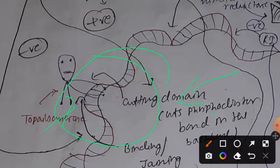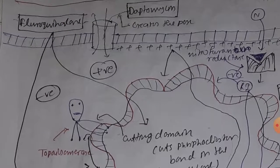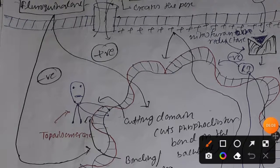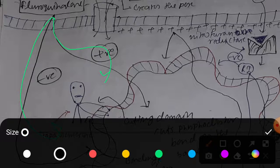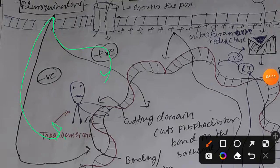That is how topoisomerase works in reducing supercoiling. Now, fluoroquinolone both positively and negatively affects topoisomerase. Fluoroquinolone first positively affects the cutting domain of topoisomerase. As a result, the topoisomerase keeps continuing its cutting process and various phosphodiester bonds are cut.